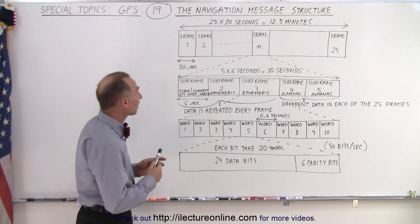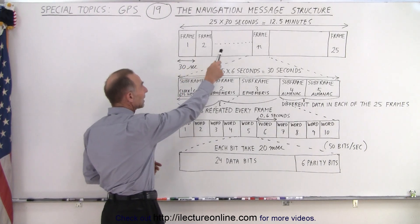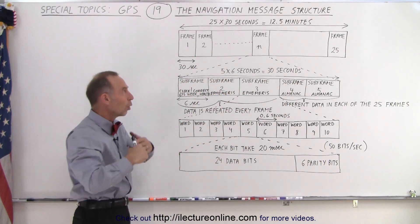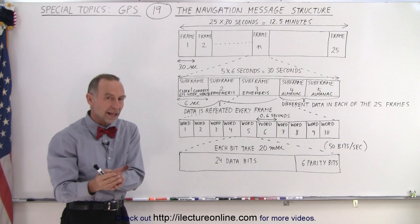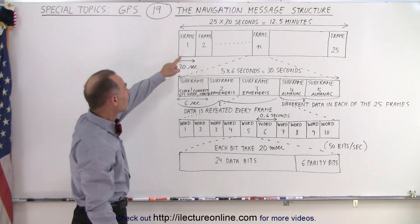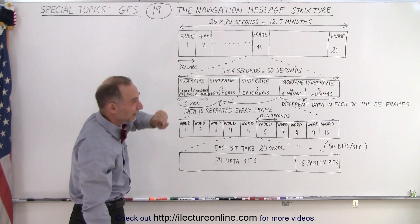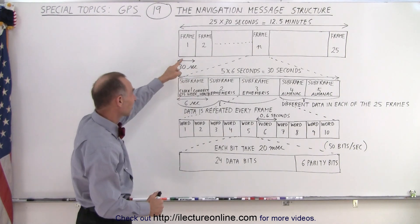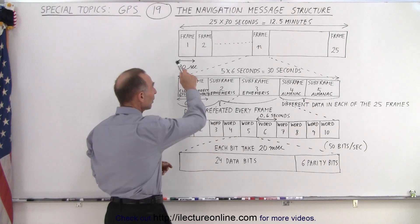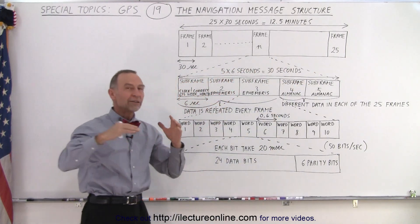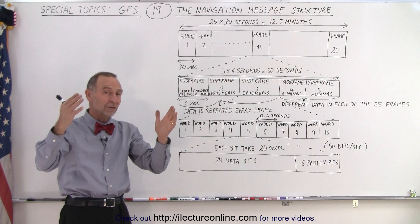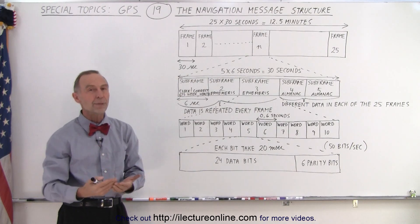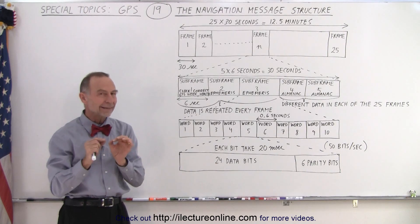Now the way that's done is by setting up frames. And it takes a total of 25 frames of data to get all the information across from the satellites to the receiver. Since each frame takes exactly 30 seconds, and 25 frames are needed, that means all the information that is sent from the satellites to the receiver takes 12 and a half minutes, and then it repeats. However, it's not that simple.